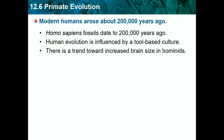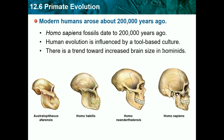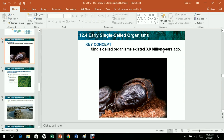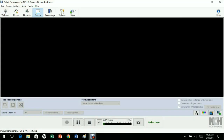There is a trend towards increased brain size in hominids. Over time, brains just keep getting bigger and we get smarter and smarter — and eventually we're probably going to grow even bigger brains. So that's the end of chapter 12, the history of life. Next time, we will be doing chapter 13.